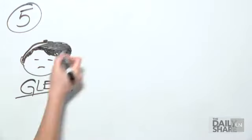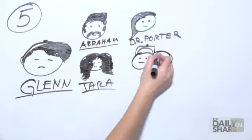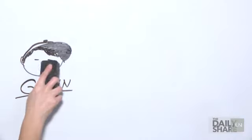And group five. Glenn and Tara meet up with Abraham and his peeps, who are headed to Washington to try to save the world. But Glenn is hell-bent on finding Maggie.